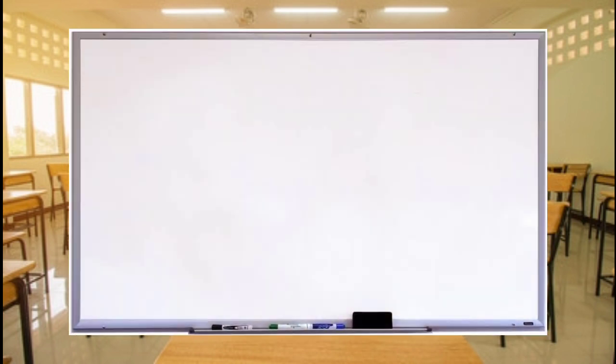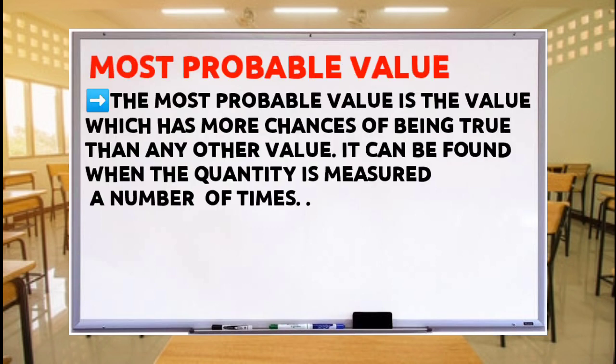As I mentioned earlier, our topic is the most probable value. What is the most probable value? The most probable value is the value which has more chances of being true than any other value. It can be found when the quantity is measured a number of times.